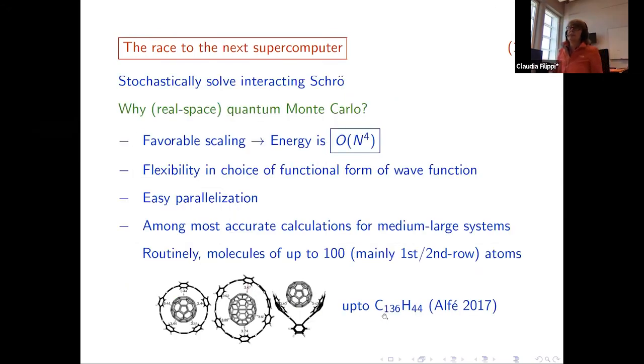So again, what I would like to start is a few words about QMC, also explaining what does real accuracy mean, what is a quantum Monte Carlo calculation, how accurate we are really, and why exascale for us now. So in quantum Monte Carlo, what we are doing is we are solving stochastically the Schrodinger equation, and we are approaching the interacting Schrodinger equation. Okay, so why would you do that? You're having favorable scaling, with respect to some of the more high-scale quantum chemistry approaches. So we are having the energy - we are having an order N to the four per Monte Carlo step. We are having flexibility in the choice of the functional form of the wave function.